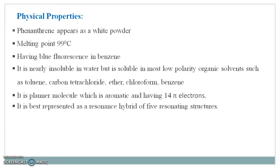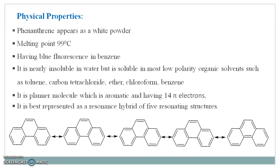Phenanthrene is best represented as a resonance hybrid of five resonating structures. Here are the resonating structures of phenanthrene, which are formed by the delocalization of electrons.